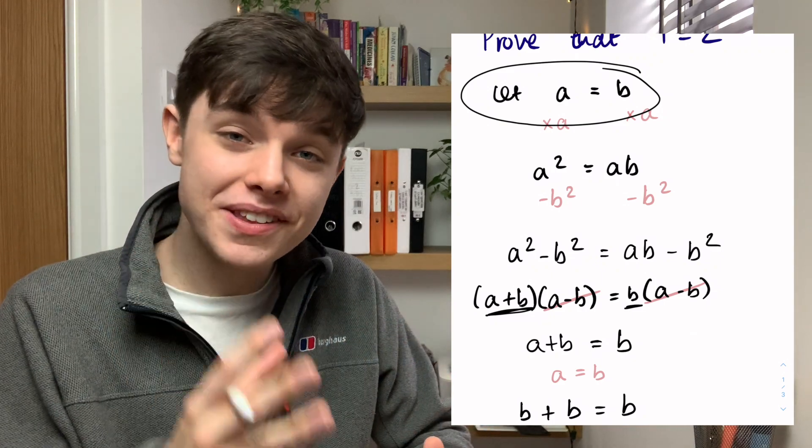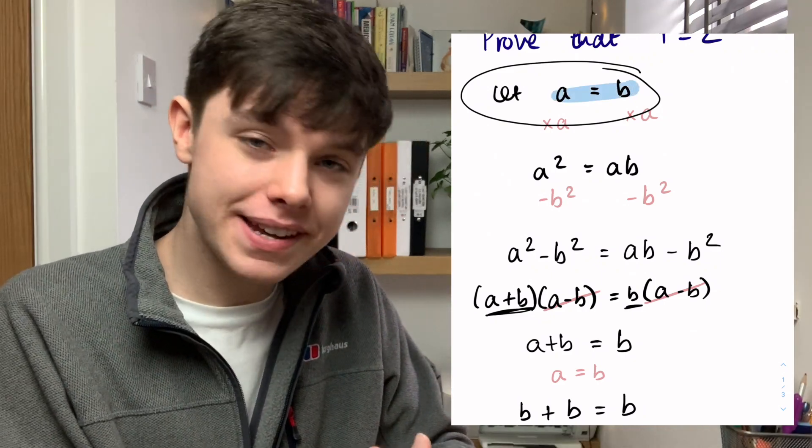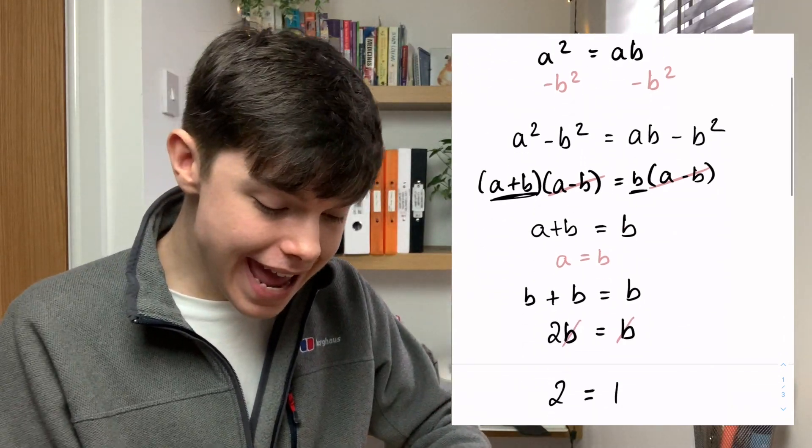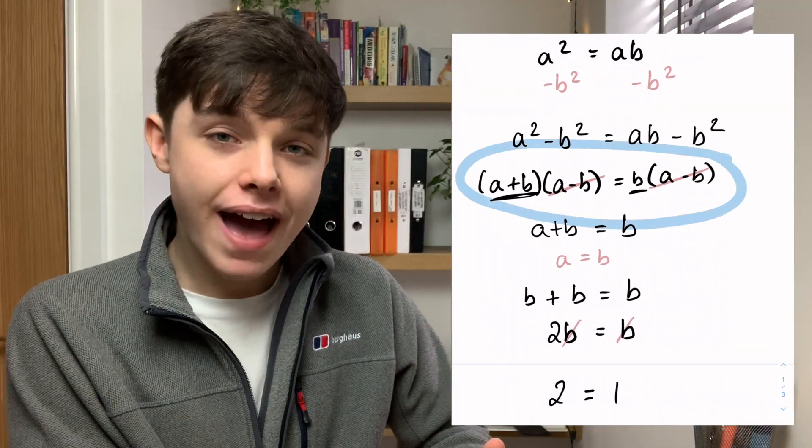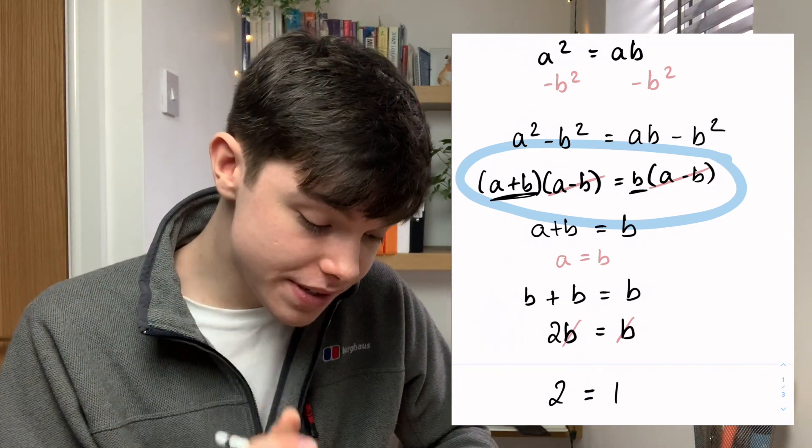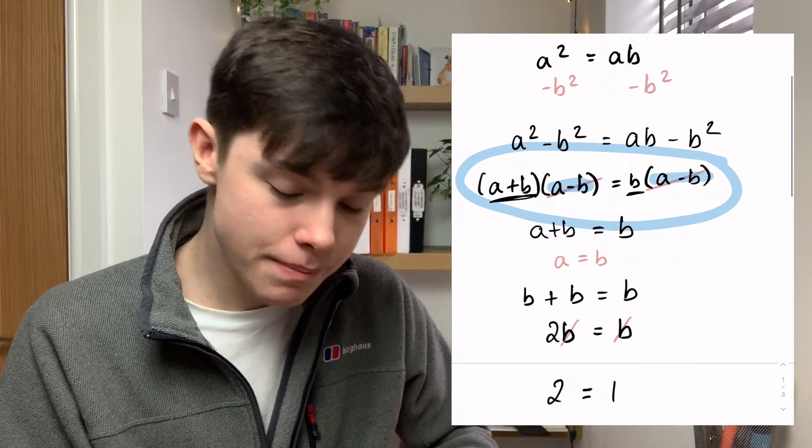Now what I'm going to do is I'm going to reveal the error. We said at the start of this proof let a equal b. Then around about here it went wrong. If a equals b, are we able to divide both sides by (a - b)?